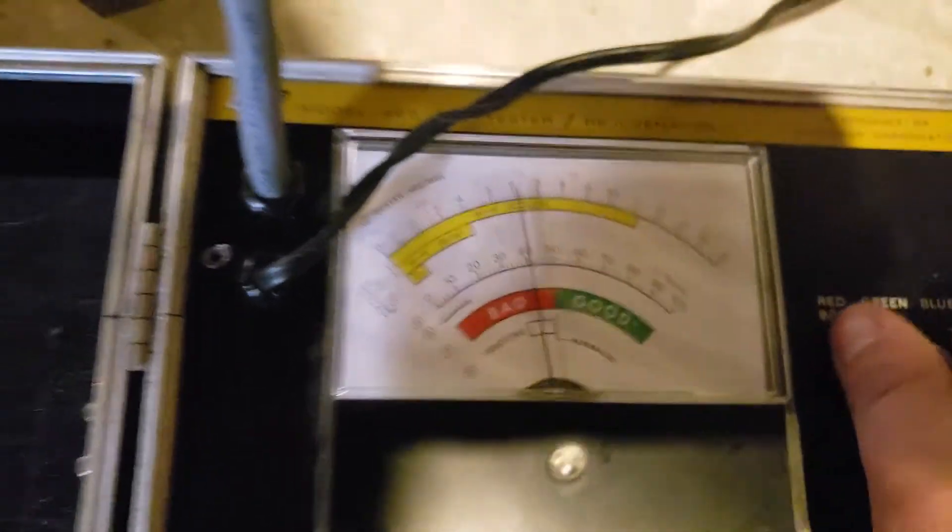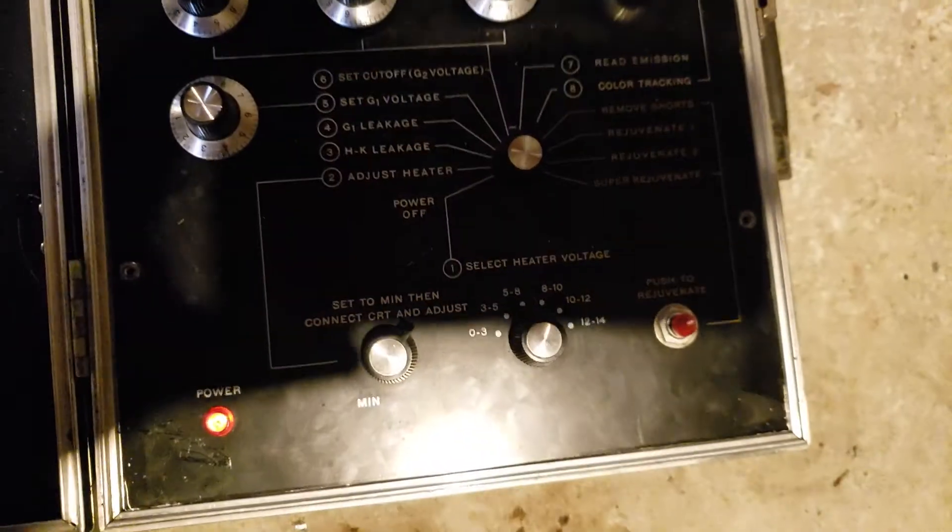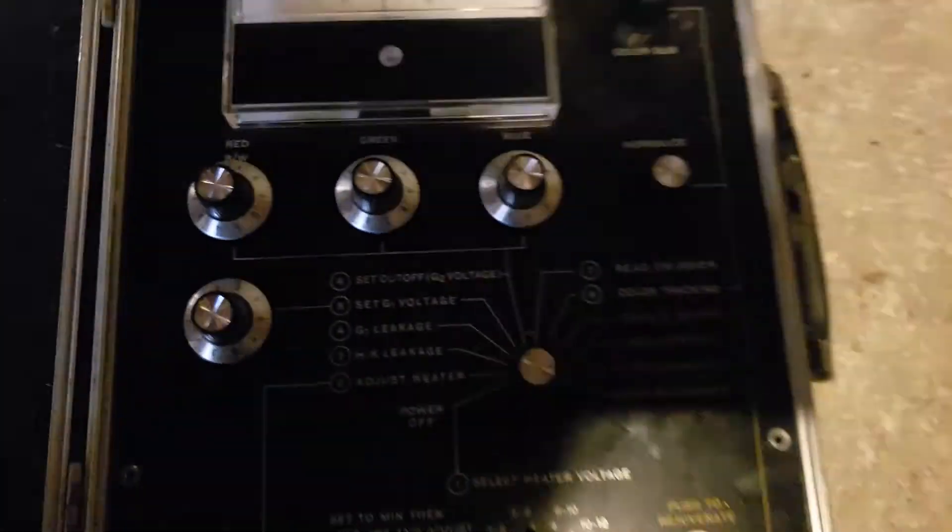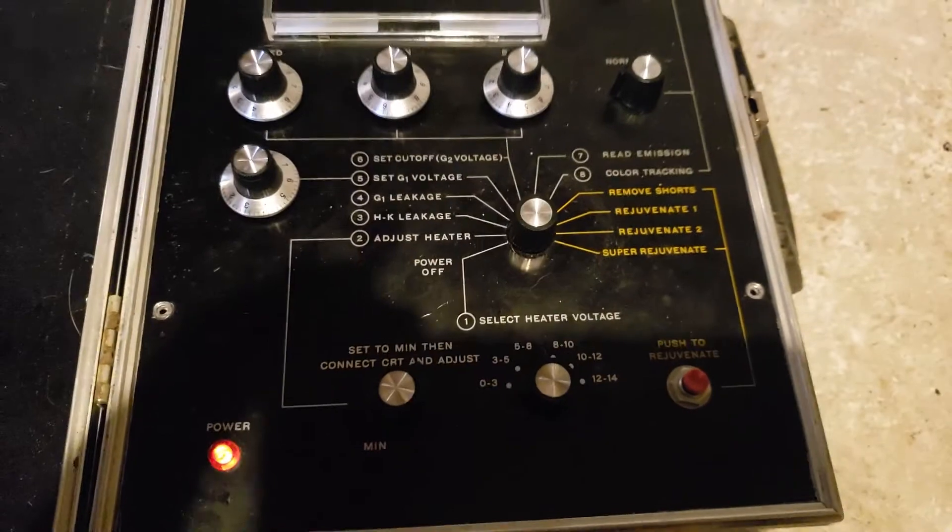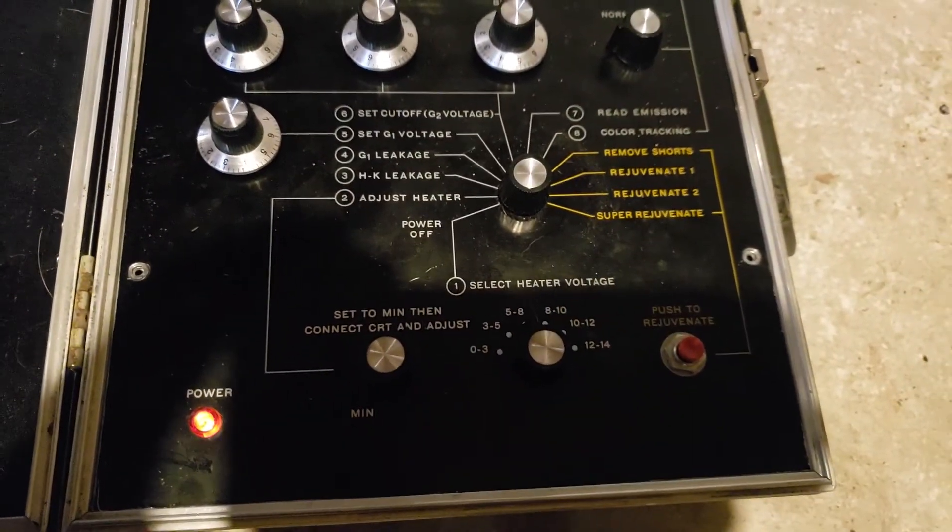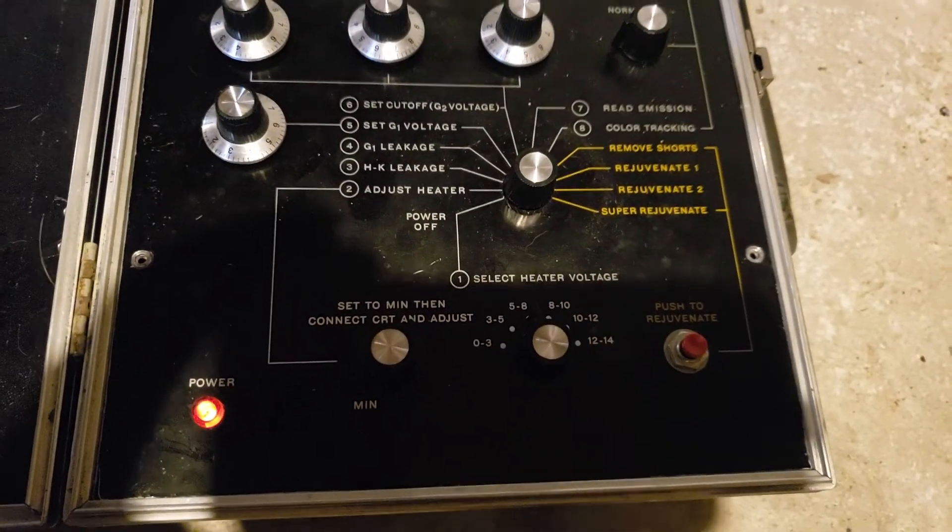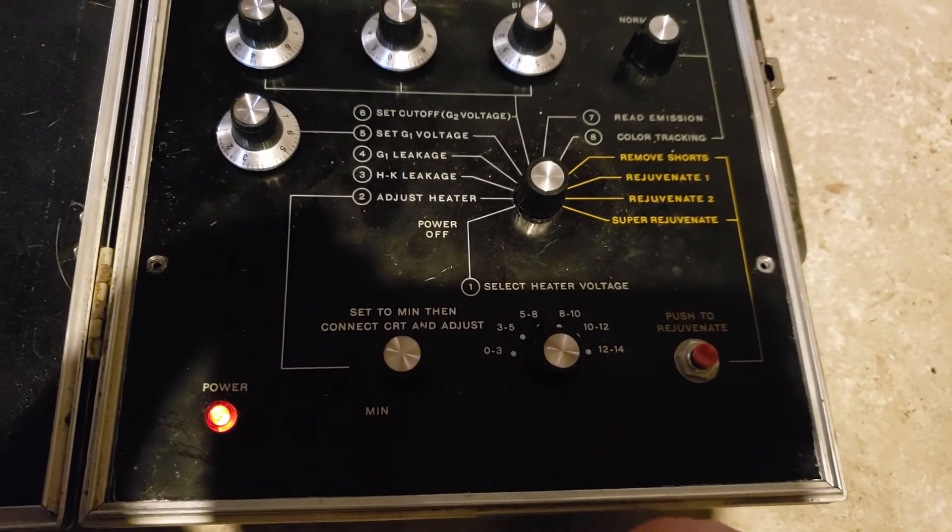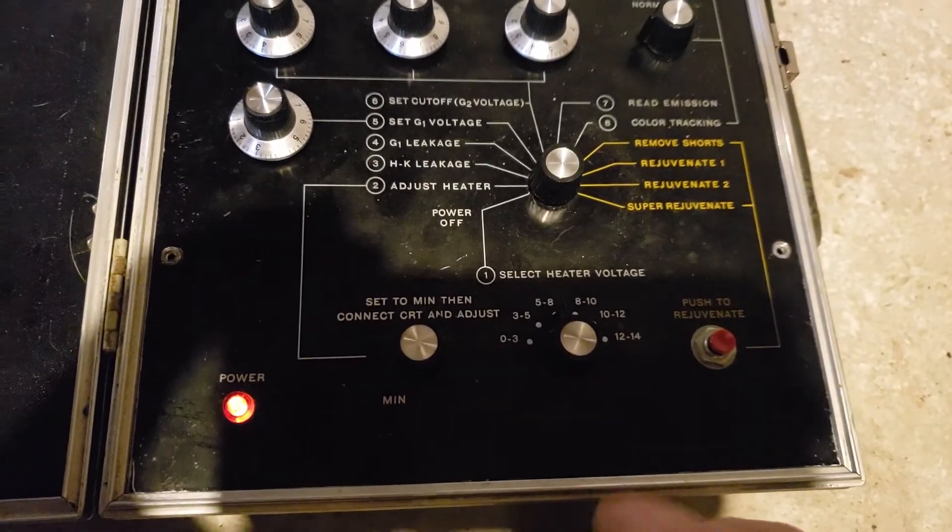There we have color tracking. So that's all the functions. I'm not going to do the rejuvenate stuff because I know this tube is good, I already did it on my BK490B.